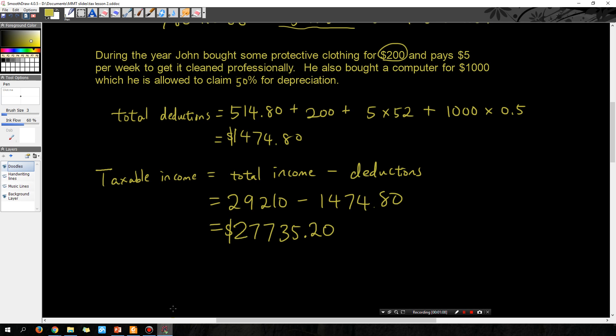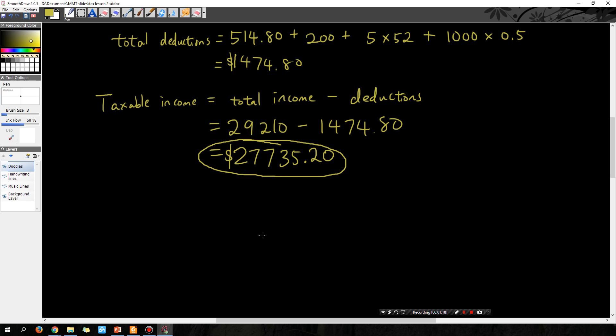So if you guys remember John that we talked about last lesson, his taxable income for the year was $27,735.20. So continuing with that, if we want to calculate how much tax he has to pay...